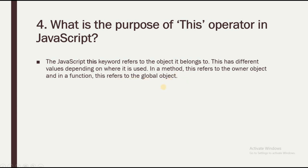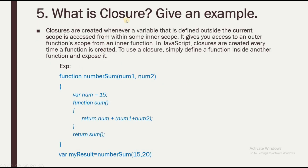The fifth question is: what is a closure? Give an example. Closures are a very important concept, especially for experienced candidates. A closure is created whenever a variable defined outside the current scope is accessed from within some inner scope. It gives you access to an outer function's scope from an inner function. In JavaScript, closures are created every time a function is created. To use a closure, simply define a function inside another function and expose it.